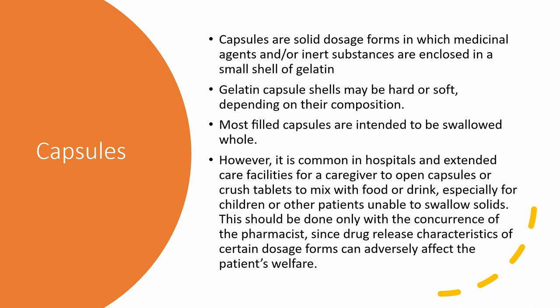There are several drug release characteristics of certain dosage forms that can adversely affect a patient's welfare. For example, if you crush an extended release tablet instead of taking it whole, your body is going to receive the whole dose at one time instead of over an extended period. Another example is enteric coated drugs, which are protected from the stomach — if you crush the tablet, you render the coating for acid protection useless because you destroy the coating.